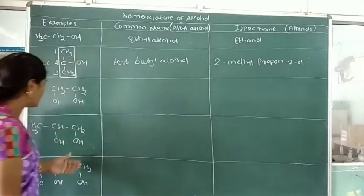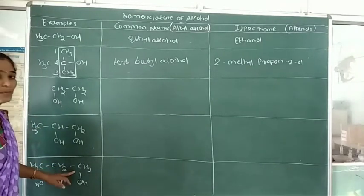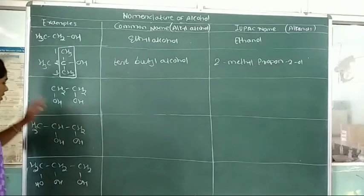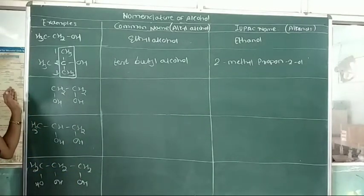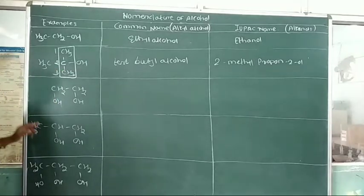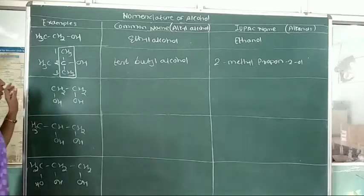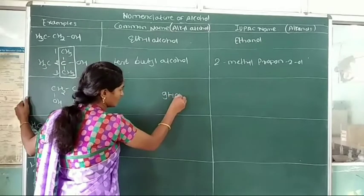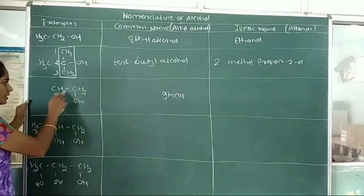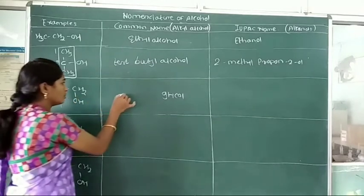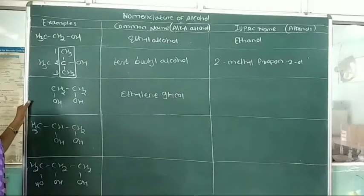The next 3 examples are polyhydric alcohols because 2 or 3 hydroxy groups are attached to the carbon atoms. In the common system, when 2 hydroxy groups are attached, we use the name 'glycol'. The 2 hydroxy groups are attached to 2 different carbon atoms of an ethylene group. The name of this compound is ethylene glycol.